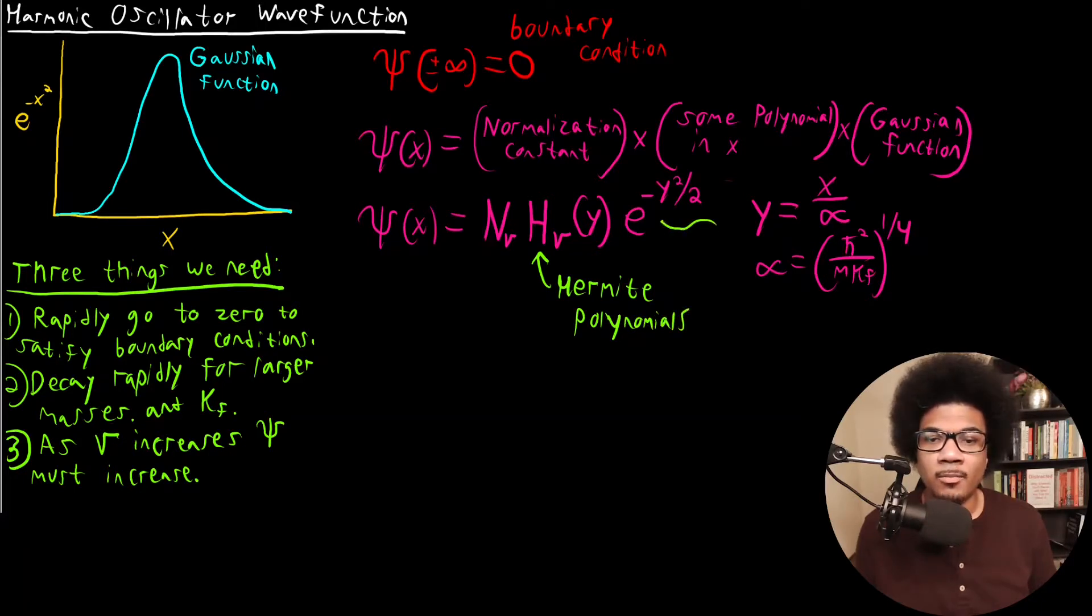These are going to be a series of polynomials called the Hermite polynomials. And this is going to be your Gaussian. So Gaussian allows us to rapidly decay to zero and satisfy the boundary condition—check. Hermite polynomials allow us to have a function that depends on the size of our system, the KF, if you will, the spring constant—check. And as nu increases, the wave function must increase. And that's actually going to be satisfied by both our normalization constant and our Hermite polynomial are going to help us satisfy that third criteria.